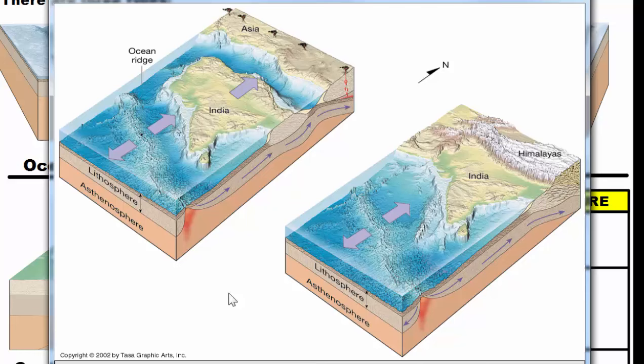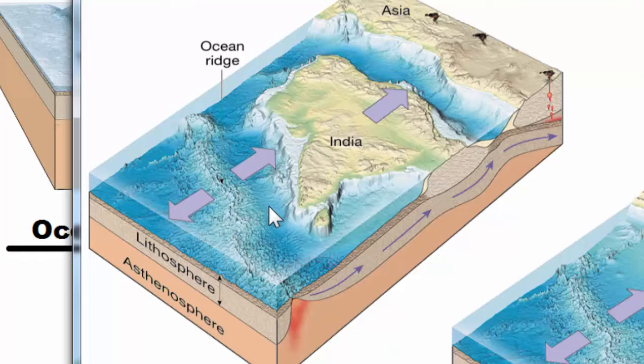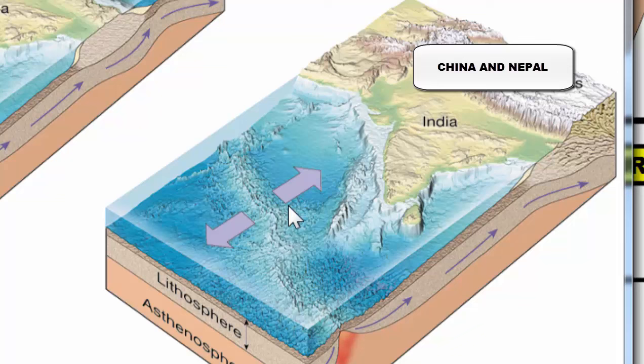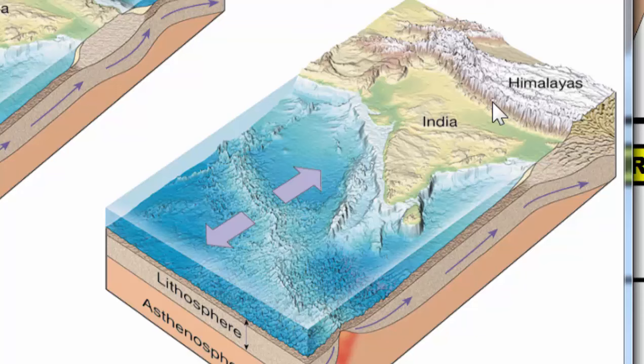Here's an example of mountain formation. When we talked about continental drift, India was much further south than it is today. But because of the ridge located nearby, India was pushed north as a result of seafloor spreading and then collided with China. Since the seafloor is going to push India further north, it gets shoved into China.